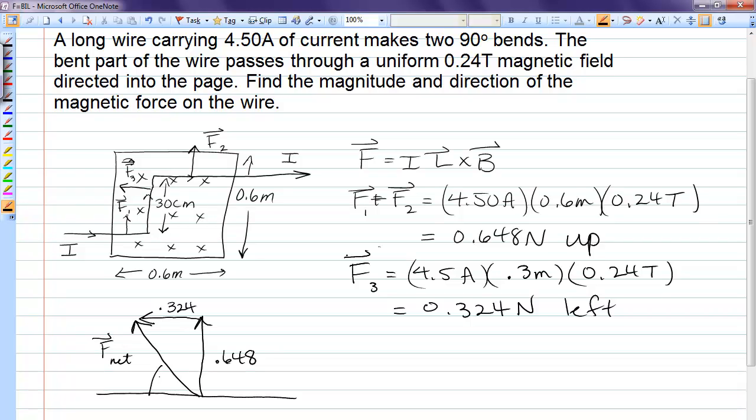So this would be F net. And I'm going to call this angle theta, and that theta would be the arctan of 0.648 over 0.324. And that angle comes out to be 63.4 degrees. And so that is our net force.